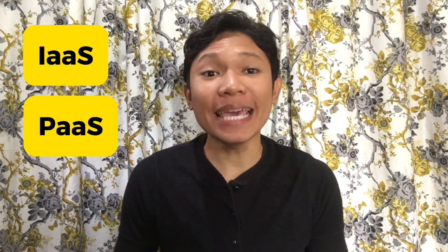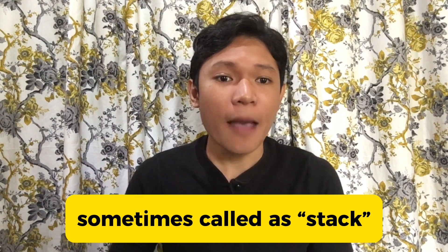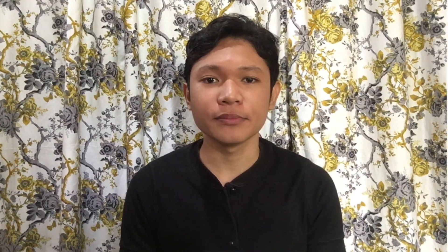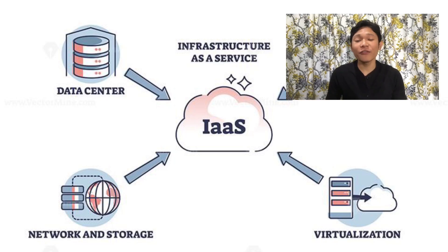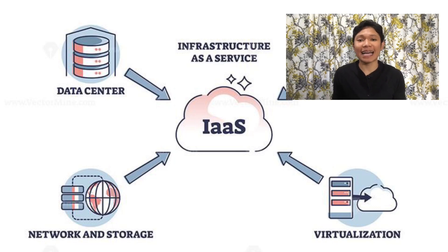Most cloud computing services fall into four broad categories: infrastructure as a service or IaaS, platform as a service or PaaS, serverless, and software as a service or SaaS. These are sometimes called the cloud computing stack because they build on top of one another. The first category is IaaS, the most basic category of cloud computing service. With IaaS, you rent IT infrastructure — servers, virtual machines or VMs, storage, networks, and operating systems — from a cloud provider on a pay-as-you-go basis.